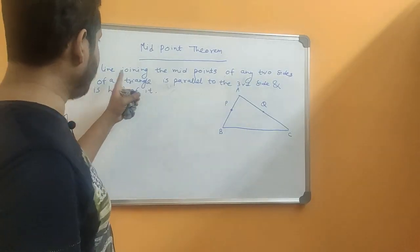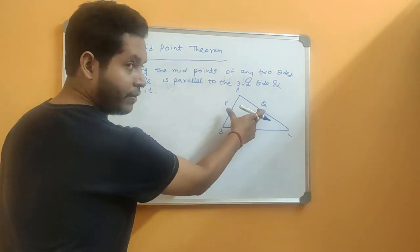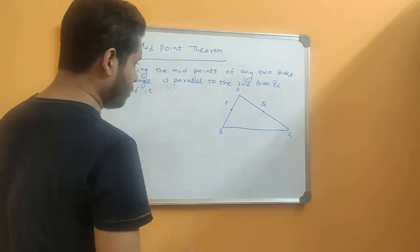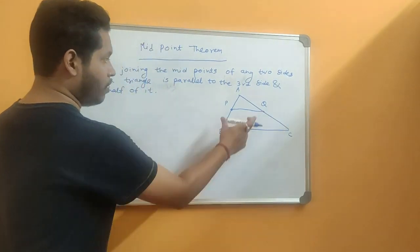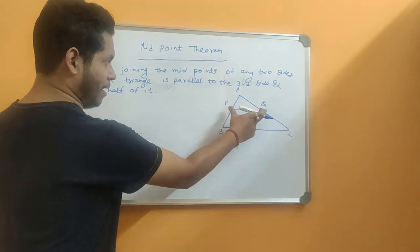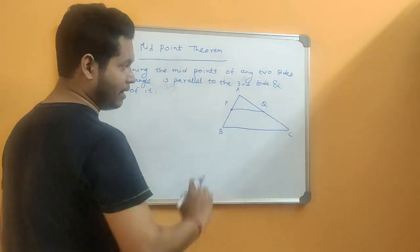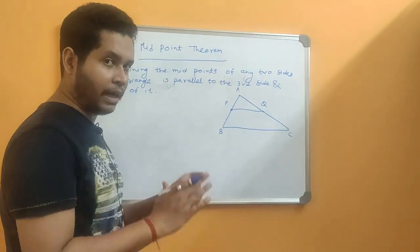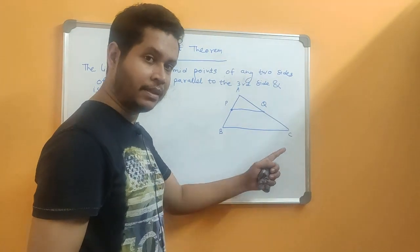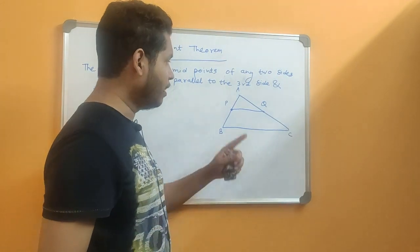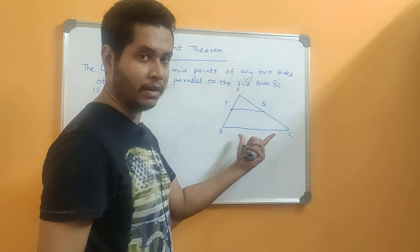The theorem states that the line joining the midpoints of two sides of a triangle — so these are the midpoints of two sides, now let's join them — this line segment joining the two midpoints is parallel to the third side. That means our target is to prove that PQ will be parallel to BC. Not only that, we also have to show that PQ will be half of BC as well.